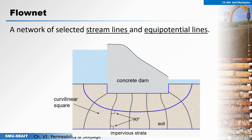In constructing the flow net, we need to consider two things. First, every segment should be a curvilinear square — that is, almost square. Second, the intersection between any streamline and any equipotential line should always be at almost 90 degrees.